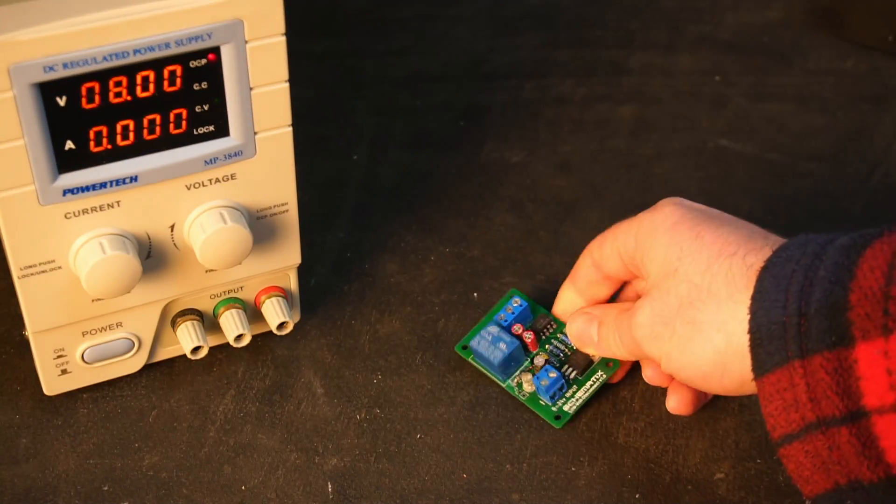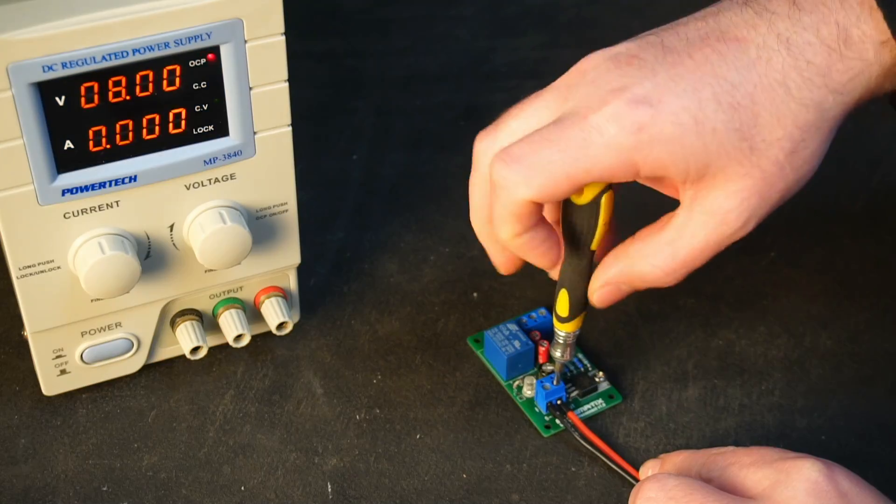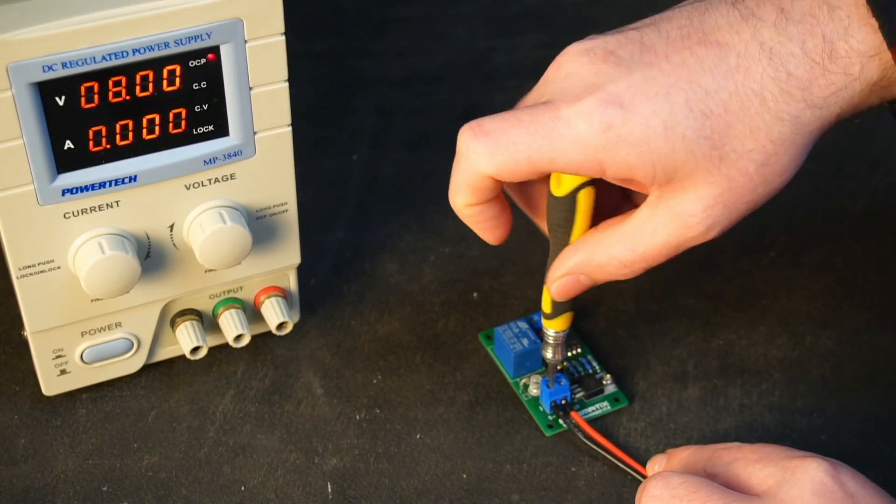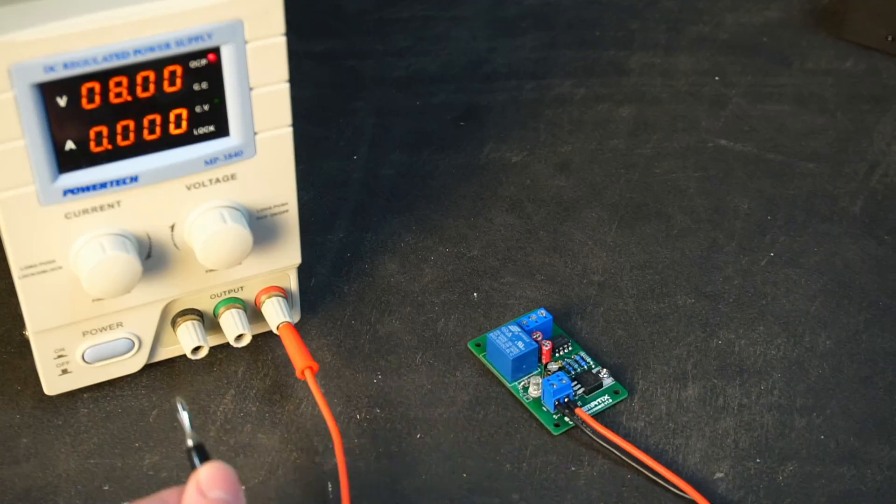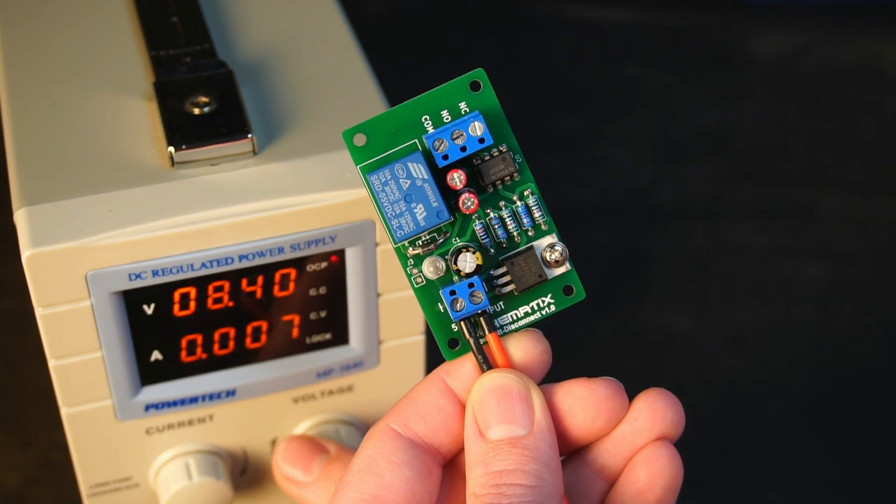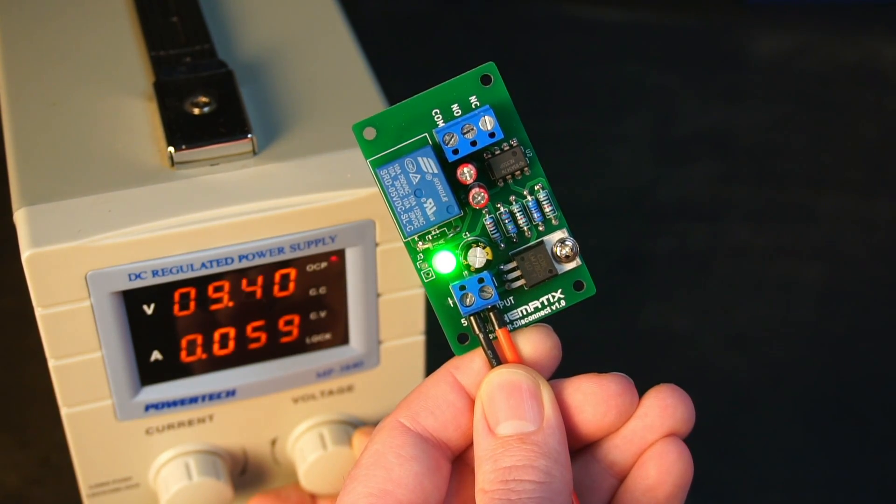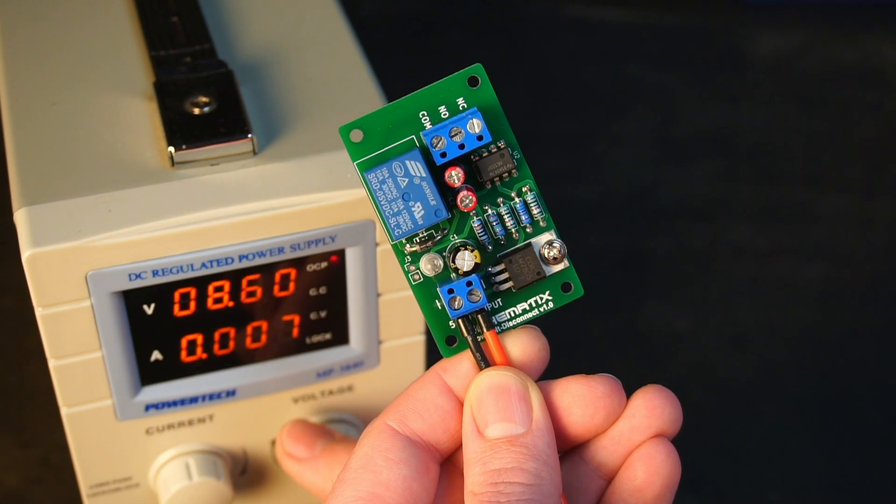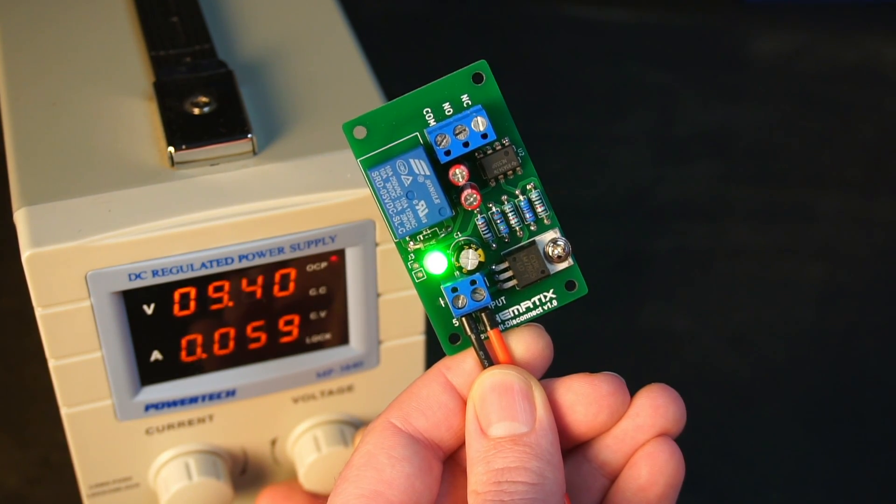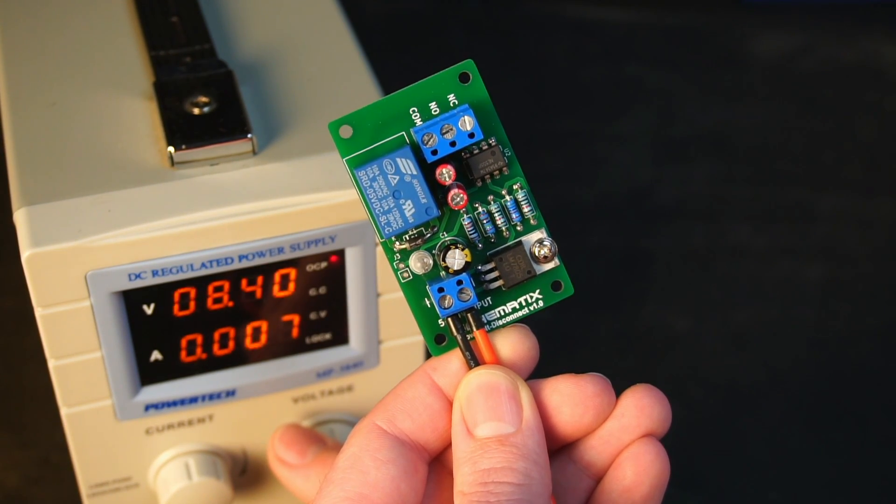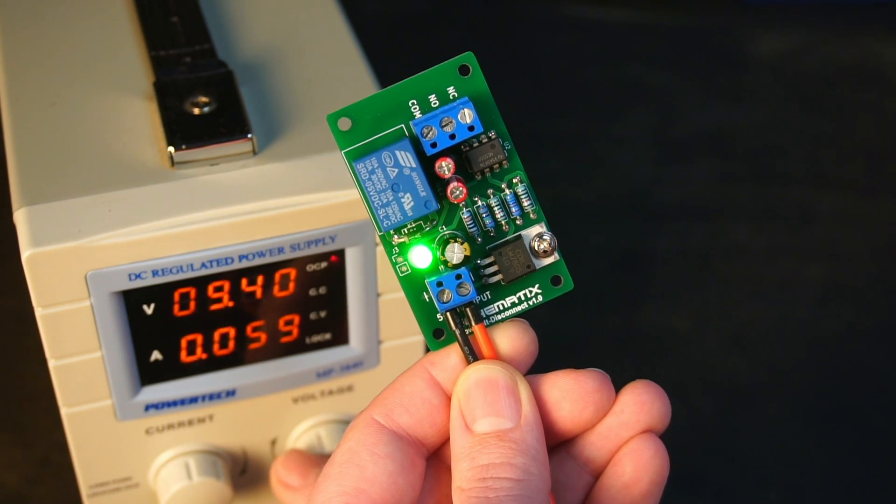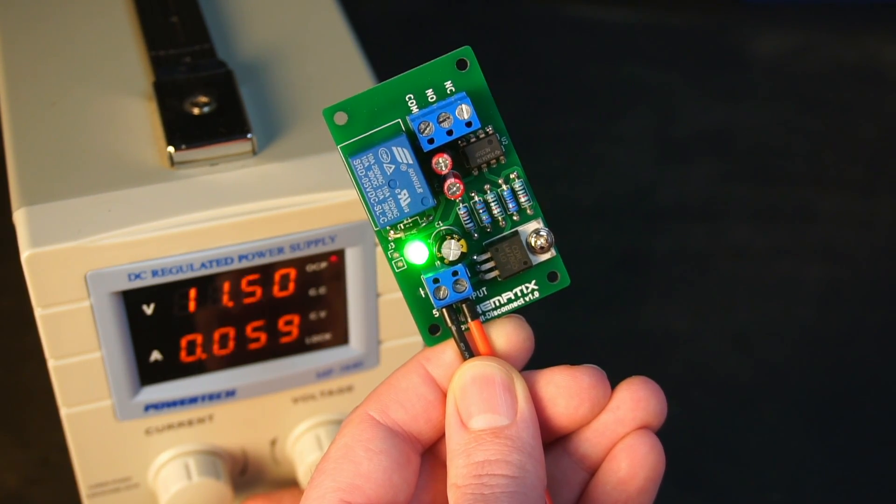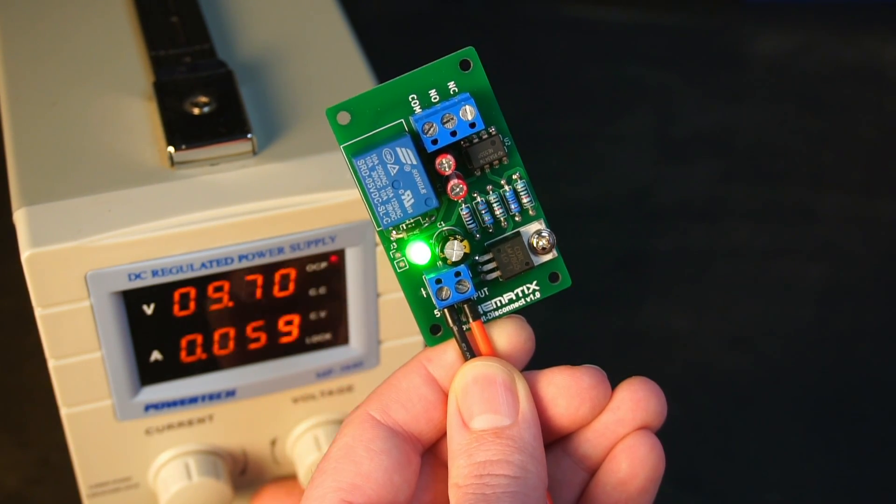At this point the circuit is complete and ready to test. After powering the circuit with my lab bench power supply, you can see anything above 9.3 volts the relay switches on indicated by the LED indicator, and anything below 8.5 volts switches the relay off.